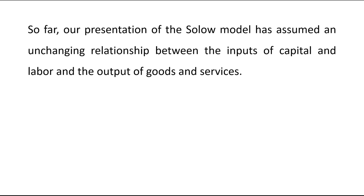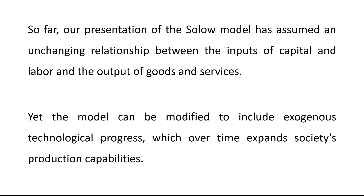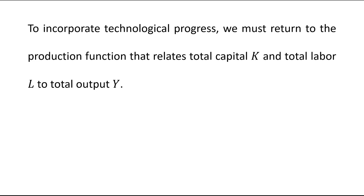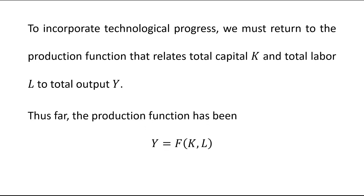So far our presentation of the Solow model has assumed an unchanging relationship between the inputs of capital and labor and the output of goods and services. Yet the model can be modified to include exogenous technological progress, which over time expands society's production capabilities. To incorporate technological progress we must return to the production function that relates total capital K and total labor L to total output Y. Thus far the production function has been Y, which is total output, as a function of capital and labor.